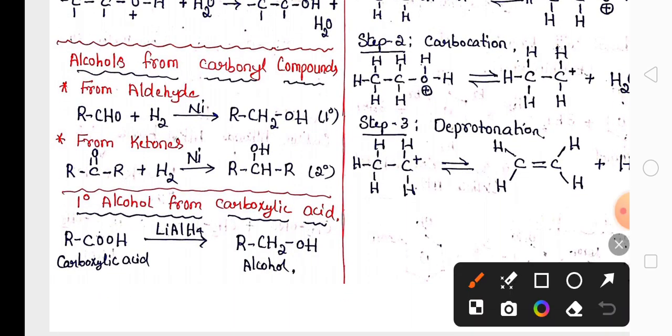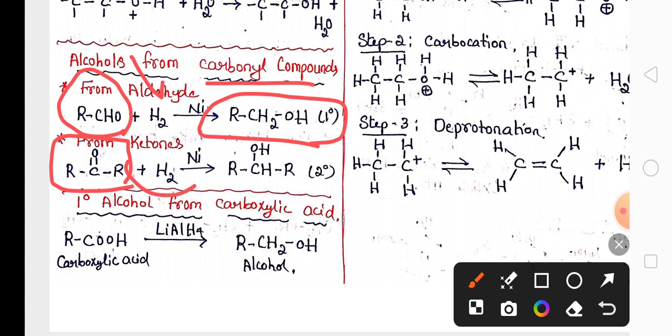Other methods to prepare alcohols from carbonyl compounds: one of the carbonyl compound aldehyde on hydrogenation gives primary alcohol and ketone is a carbonyl compound on hydrogenation in the presence of catalyst, it gives secondary alcohol.